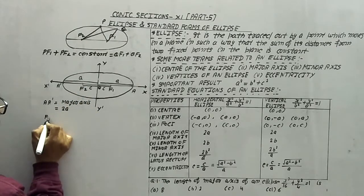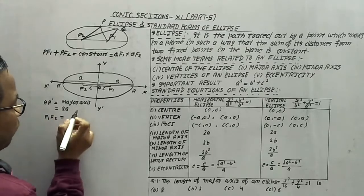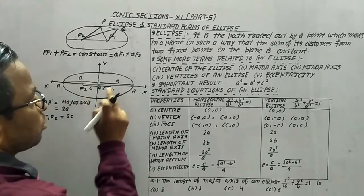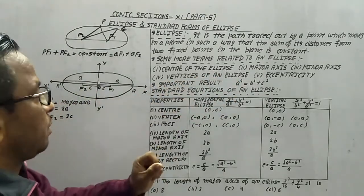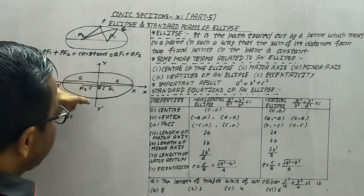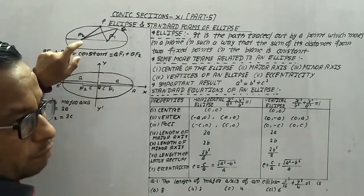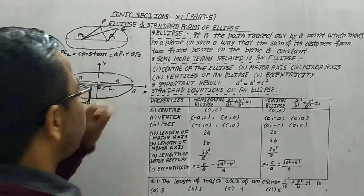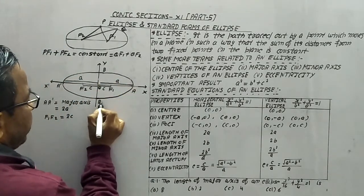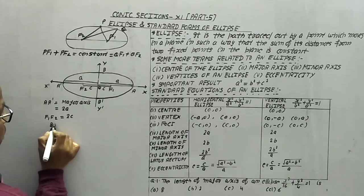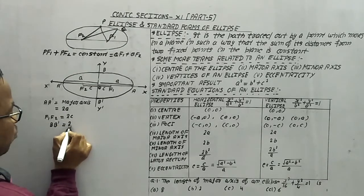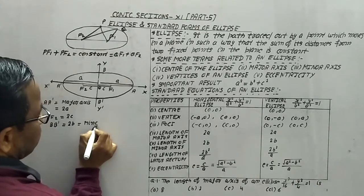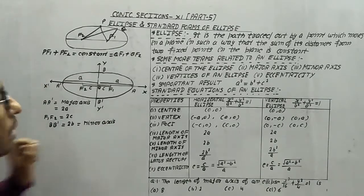Similarly, the distance F1F2 between the foci is always 2c, so OF1 = OF2 = c. Minor axis: the line segment perpendicular through the center and joining the end points of the ellipse is known as the minor axis. The endpoints are B and B', and the length of the minor axis is always taken as 2b.